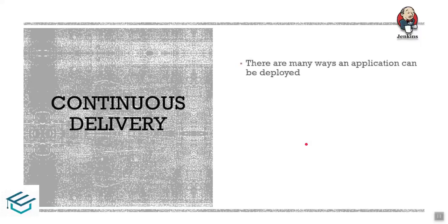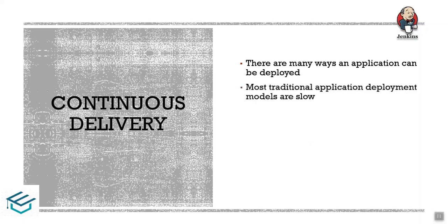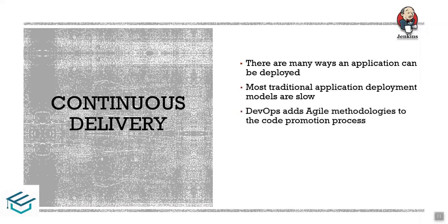In continuous delivery, we have an application to deploy. There are many ways that it can be deployed. There are manual steps and way principles we follow. It's slow to follow the code promotion process — you develop code, deliver it and apply it on the production server, tester, or staging server.